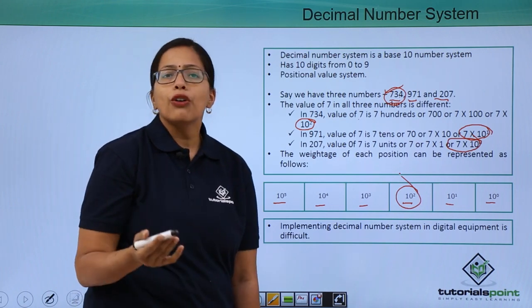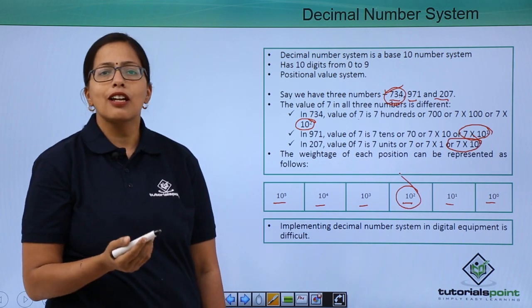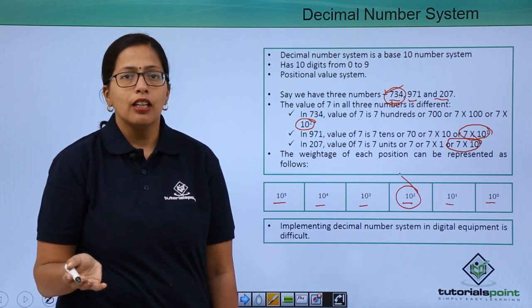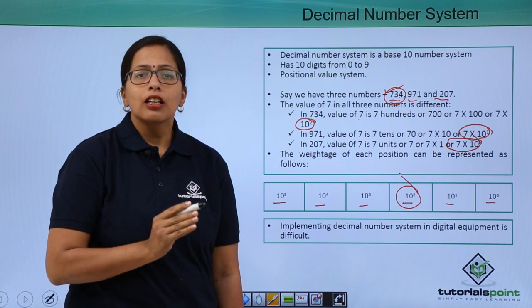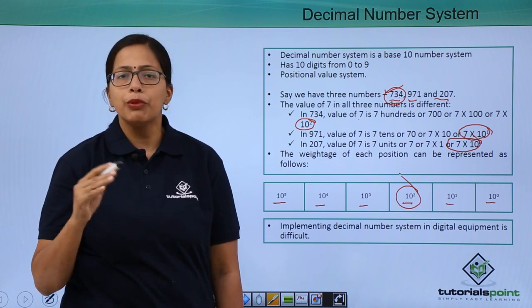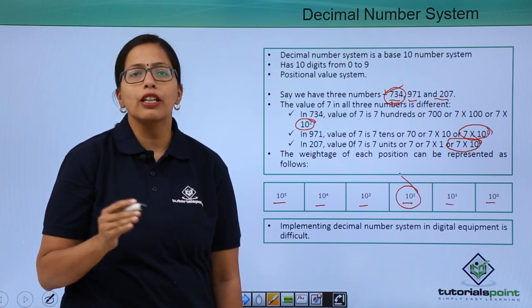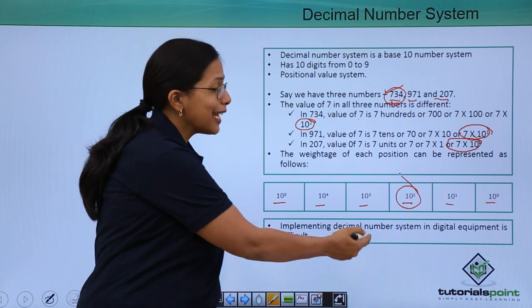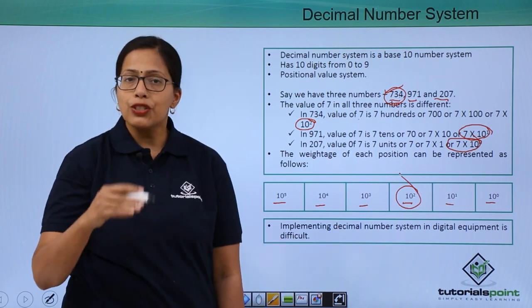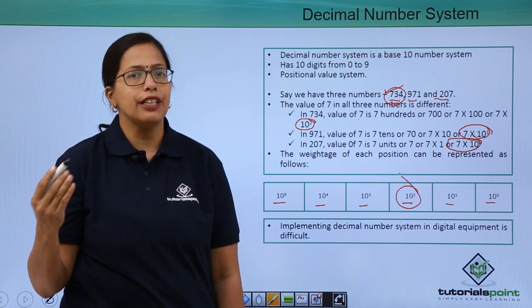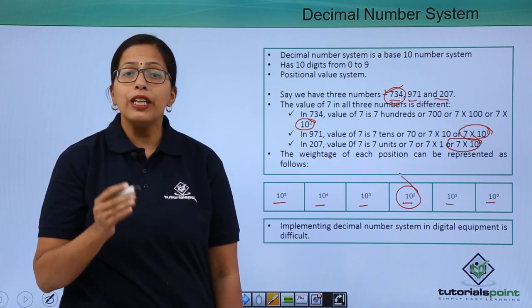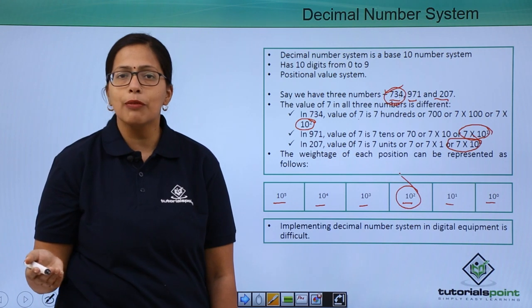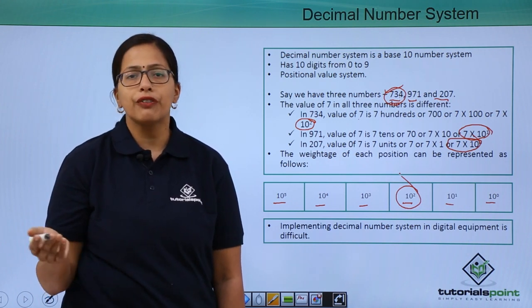Now when we talk of a computer system, it understands only zeros and ones. Why? Because when we talk of a computer system, we can only talk in terms of electrical signals. Now, implementing 10 different digits as different voltages is very difficult. So we need to have some other number system using which we can work with computers.